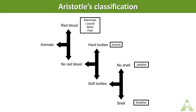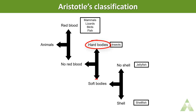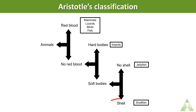Animals which had red blood cells included mammals, lizards, birds, and fish. Those who didn't have red blood cells were further divided: those with hard bodies like hard-shelled insects, and those with soft bodies like shellfish and jellyfish. Shellfish such as oysters have a shell covering, while jellyfish are very delicate and soft.